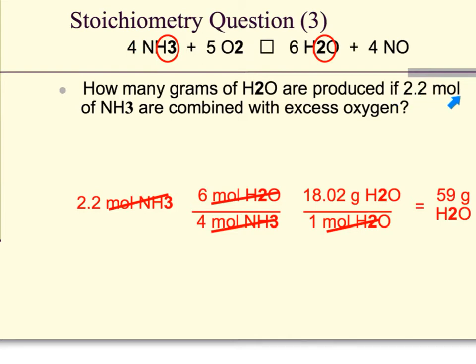Because we have 2.2 moles of NH3, NH3 is chemical A. And we are asked to solve for grams of H2O. Therefore, H2O will be chemical B.